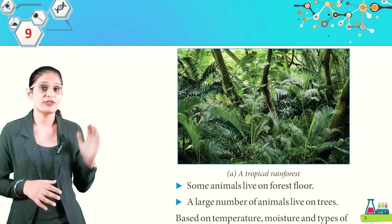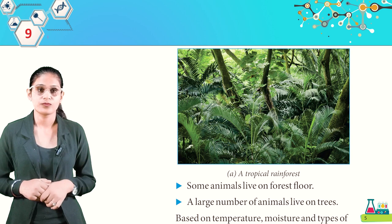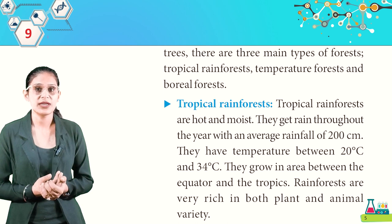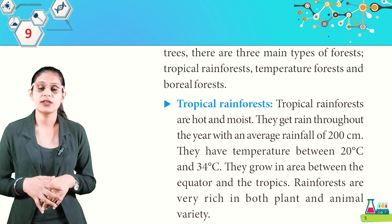Some animals live on the forest floor, and a large number of animals live on trees. Based on temperature, moisture, and types of trees, there are three main types of forest: tropical rainforest, temperate forest, and boreal forest.